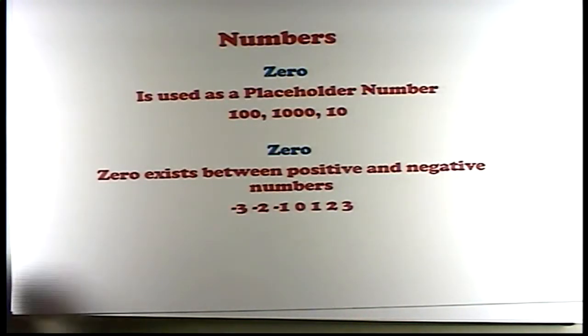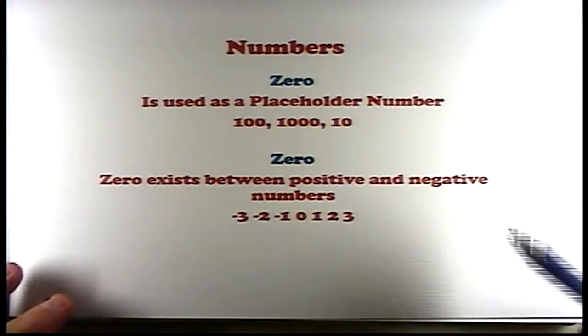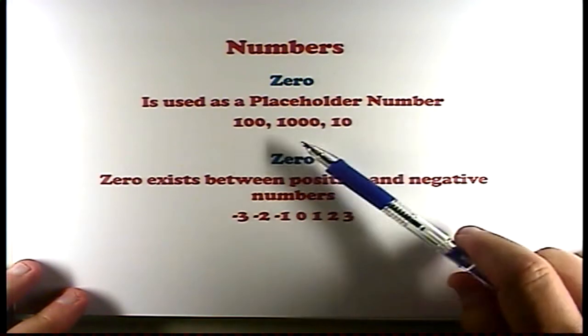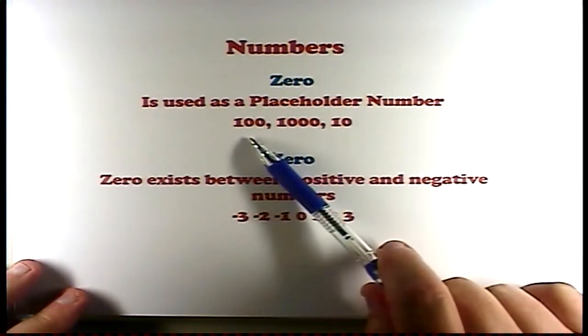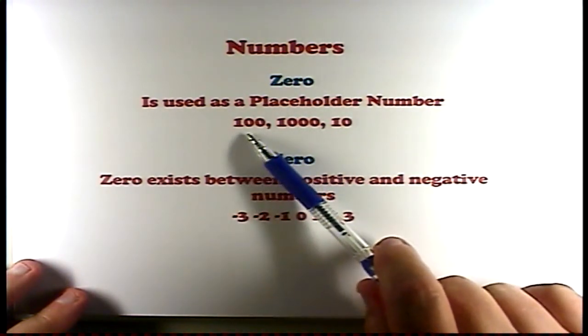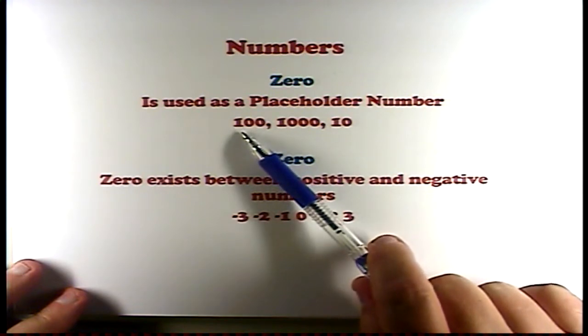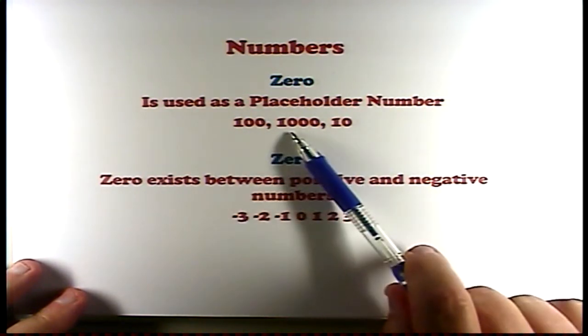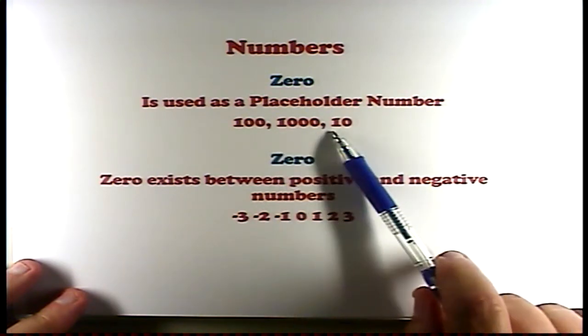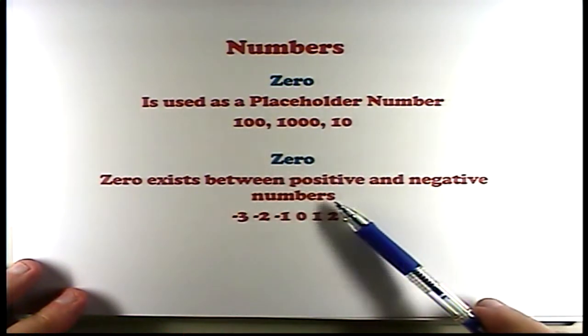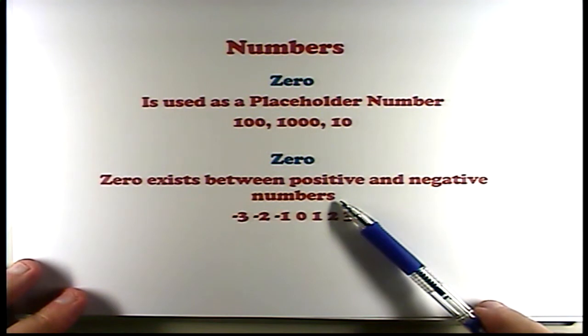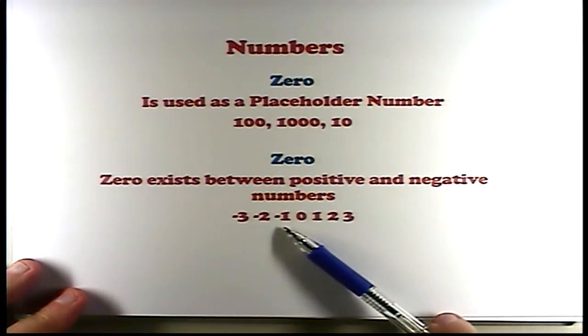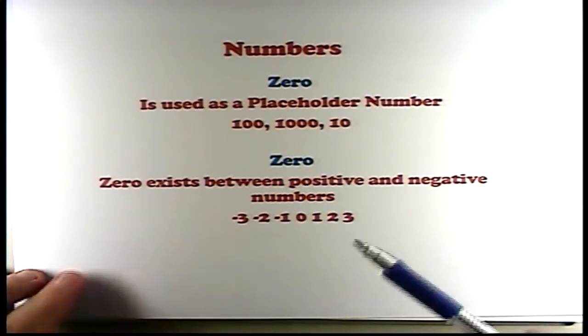When we're studying numbers, we learn about zero. Zero is used as a placeholder number, like 100. The two zeros after the one give you a placeholder to make this number 100. Three zeros makes it 1,000, and one zero makes it 10. Zero also exists between positive and negative numbers, where you have minus three, minus two, minus one, then zero, then one, then two, then three.